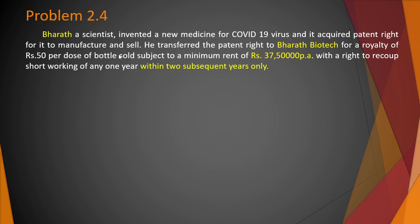Here the royalty is calculated based on sales rather than output. With a right to recoup short working of any one year within two subsequent years only — that means it's a floating short working recoupment.